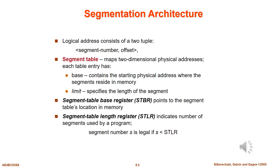The basic components of segmentation architecture include the segment table, the Segment Table Base Register (STBR), and the Segment Table Length Register (STLR). The most important part is the segment table. It stores information about each segment of the process and has two columns: the first stores the size or length of the segment, and the second stores the base address or starting address of the segment in main memory.